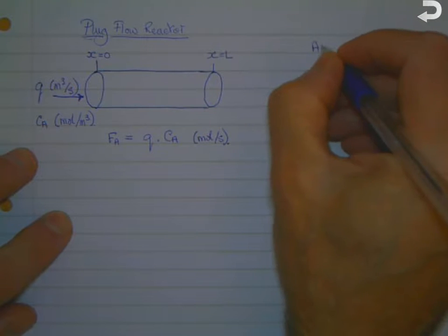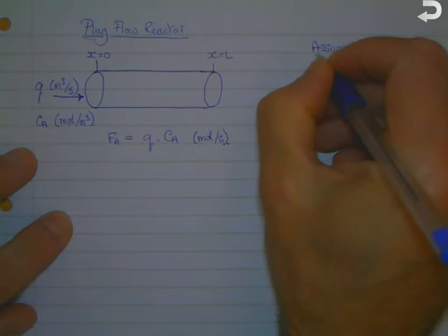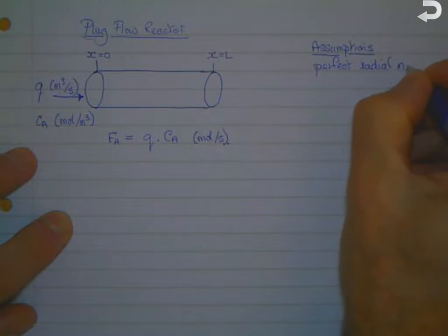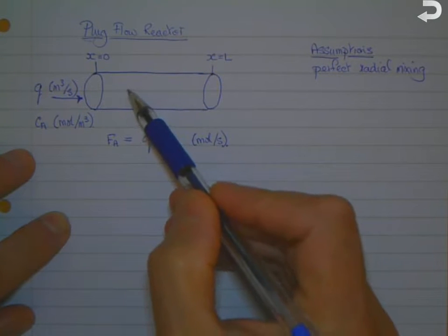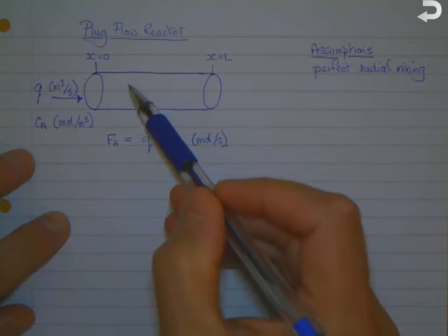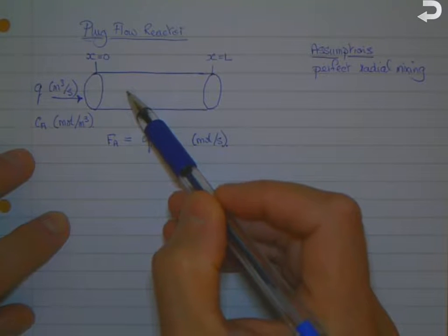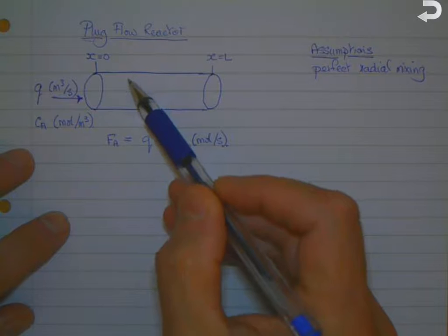So let's just state the assumptions. The first one is that we've got perfect radial mixing. What we mean by that is that the composition, the velocity, the temperature, etc., is the same across the whole of the diameter of the tube. So conditions and concentration at the center of the tube are the same as the concentration close to the wall at the same value of x.